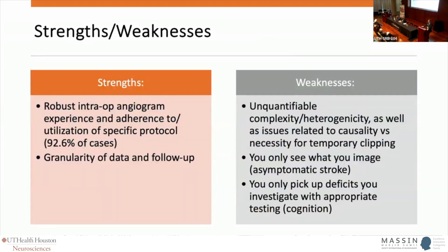This study has other strengths and weaknesses. Doing this intraoperative angiogram is something we specifically do, but it's not always done. There are questions about data granularity, and we do have heterogeneity across a group of six surgeons — this is not a protocol. Also, you only see what you image, so the rate of asymptomatic events may be higher. Similarly, you only pick up neurologic deficits you investigate for, and patients coming out of anesthesia raise the bar for detecting subtle or cognitive deficits.